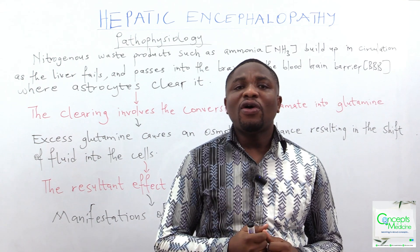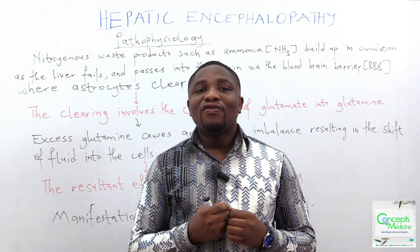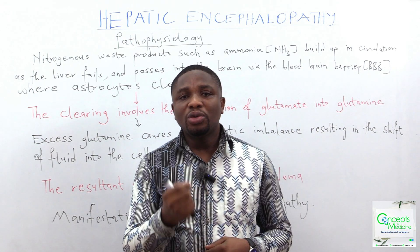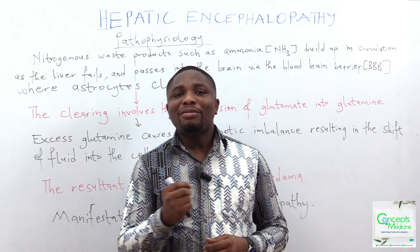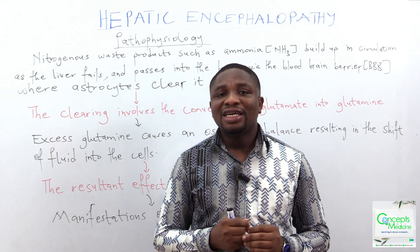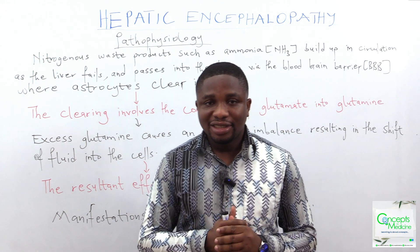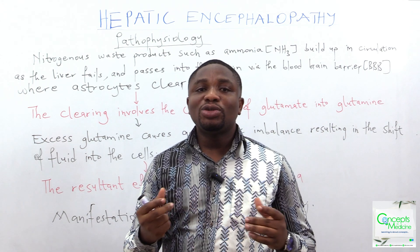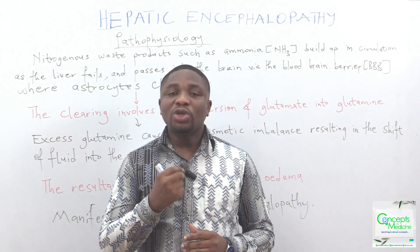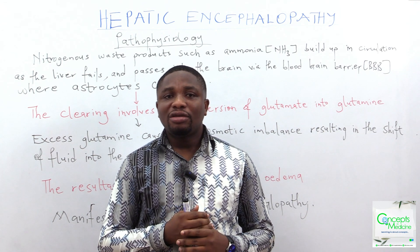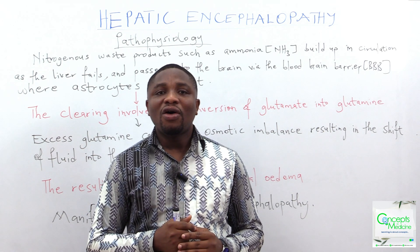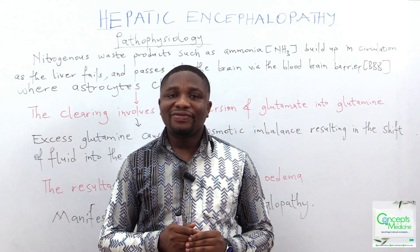The clearing involves the conversion of glutamate, which is an amino acid in the brain, into glutamine. Glutamine has a high osmotic potential, thereby creating an osmotic imbalance. This osmotic imbalance leads to the shift of fluid into the cell, and the resultant effect of that fluid shift is cerebral edema, leading to the manifestations of hepatic encephalopathy.